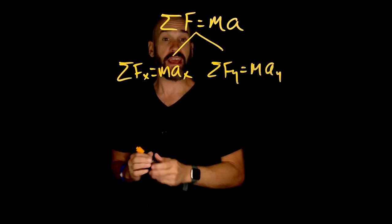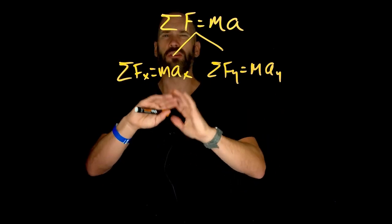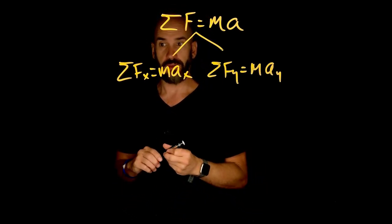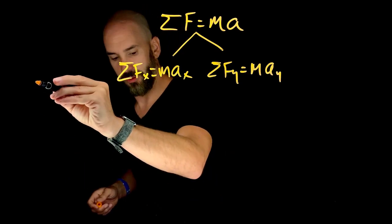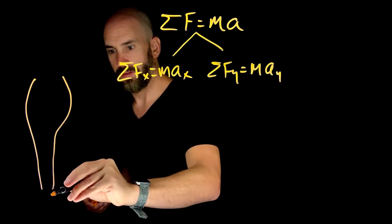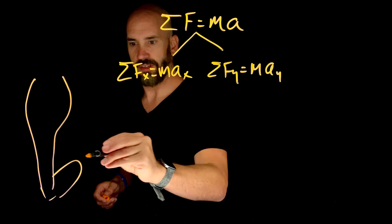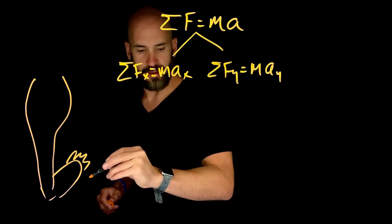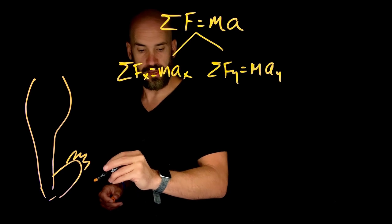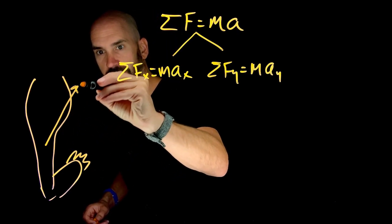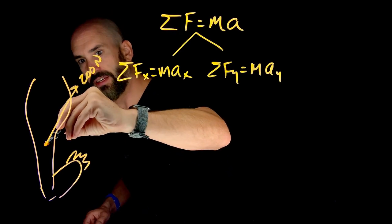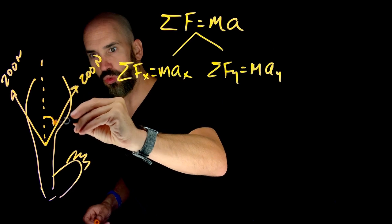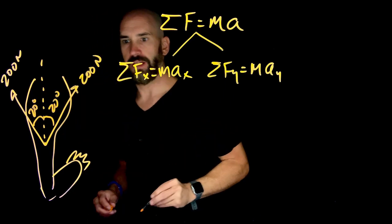Before we actually do a problem, this is very abstract and you might be fuzzy about what this means exactly. So if you could go to the slide that says 'getting up on your tippy toes' — in this problem we have a calf and a foot with toes. We have these two calf muscles and they apply symmetric 200 Newton forces at these angles — 20 degrees for both.